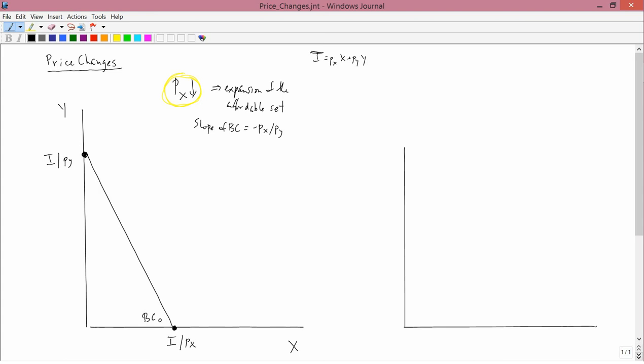So what we're going to get is that point moving. For example, then the new budget constraint would look something like this. So this is I divided by, let's say, PX prime. Prime is a way that mathematicians often denote the new value of something, the new value of PX.